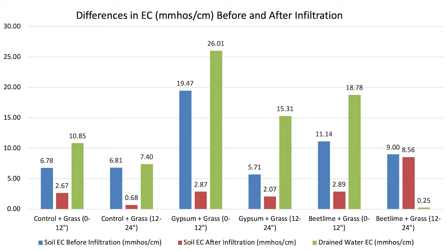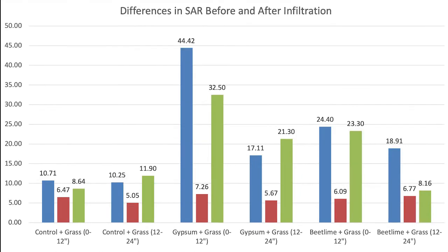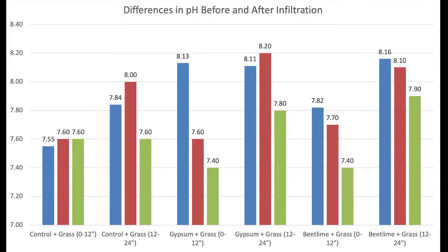Next fastest infiltration happened in 255 minutes. Decrease in SAR ranged between 39 and 83 percent. Highest decrease was in gypsum samples, followed by beet lime and control samples. There was not much change in soil pH after infiltration compared to before infiltration.